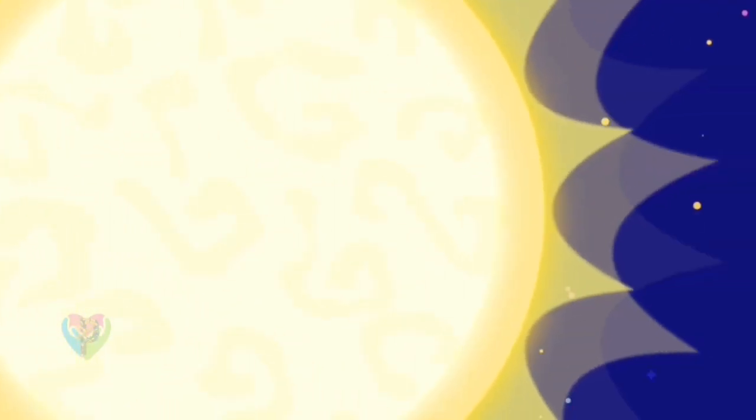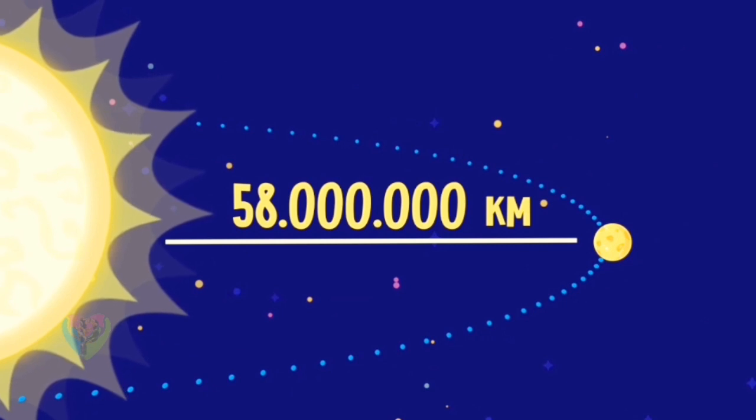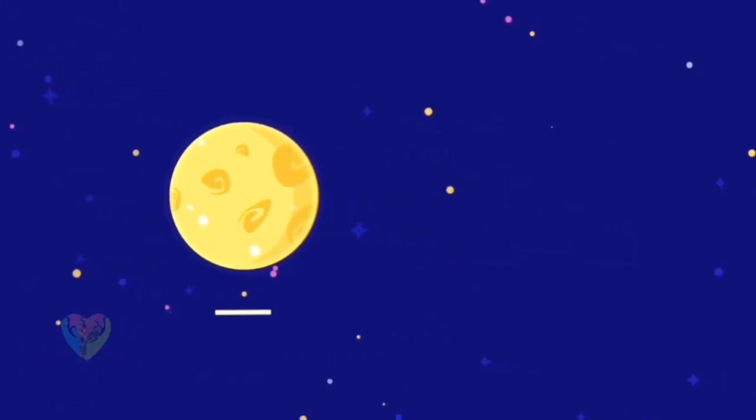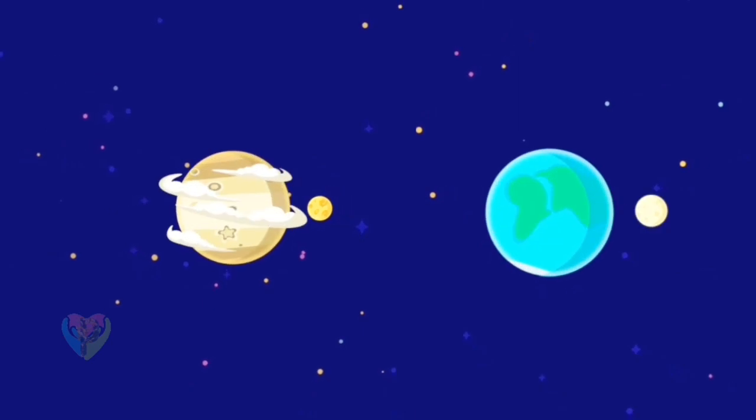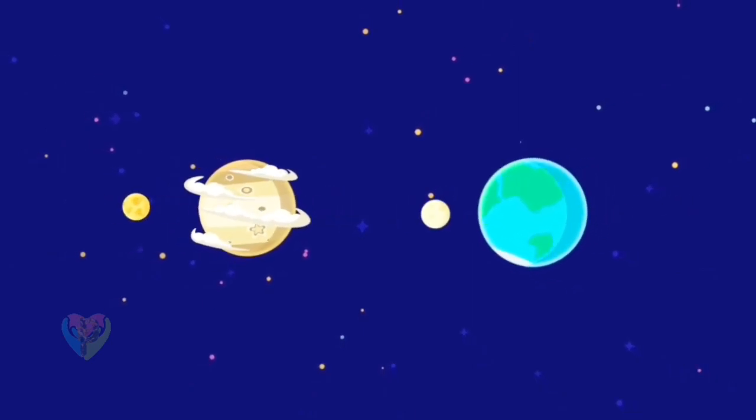This is Mercury, the smallest planet in the solar system, and one that is closest to the sun. In size and appearance, it is similar to the moon. Perhaps a long time ago, it used to be a satellite of Venus.